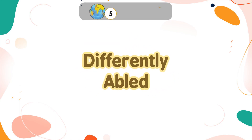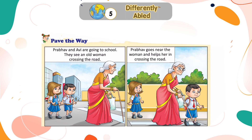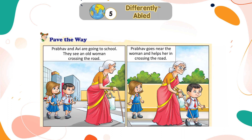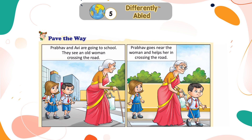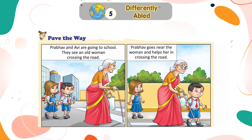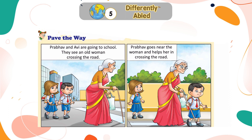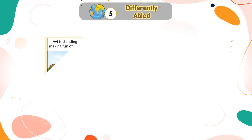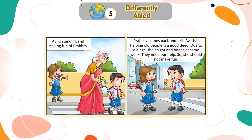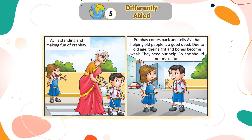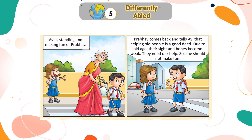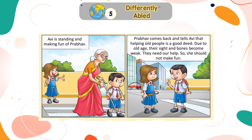Chapter 5: Differently Abled Pave the Way. Prabhav and Avi are going to school. They see an old woman crossing the road. Prabhav goes near the woman and helps her in crossing the road. Avi is standing and making fun of Prabhav. Prabhav comes back and tells Avi that helping old people is a good deed.